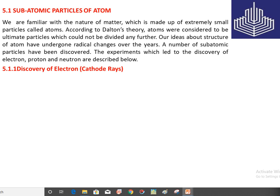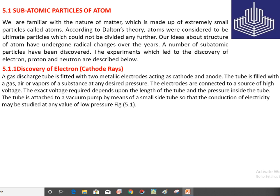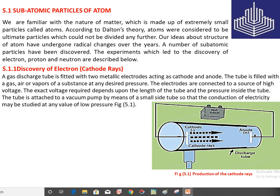First is the discovery of electron, also called cathode rays. To discover the electron, we use a gas discharge tube as shown in figure 5.1. This gas discharge tube is fitted with two metallic electrodes acting as cathode and anode. The tube is filled with a gas, air, or vapors of a substance at any desired pressure — noble gases like neon, argon, or helium are commonly used.